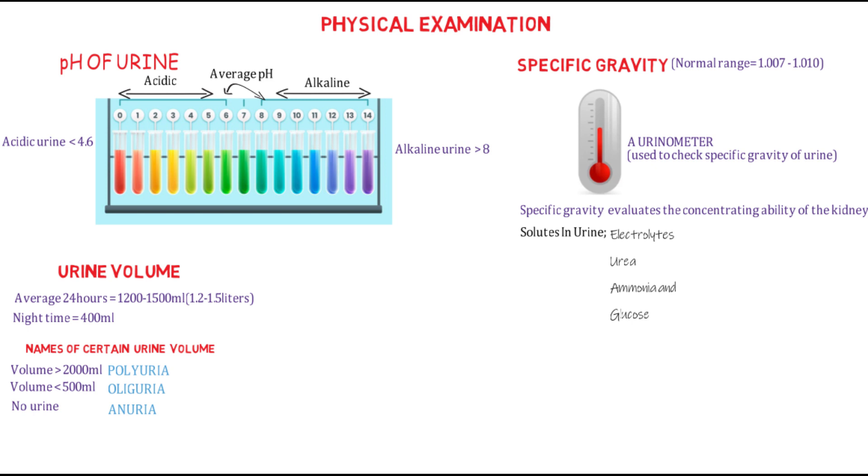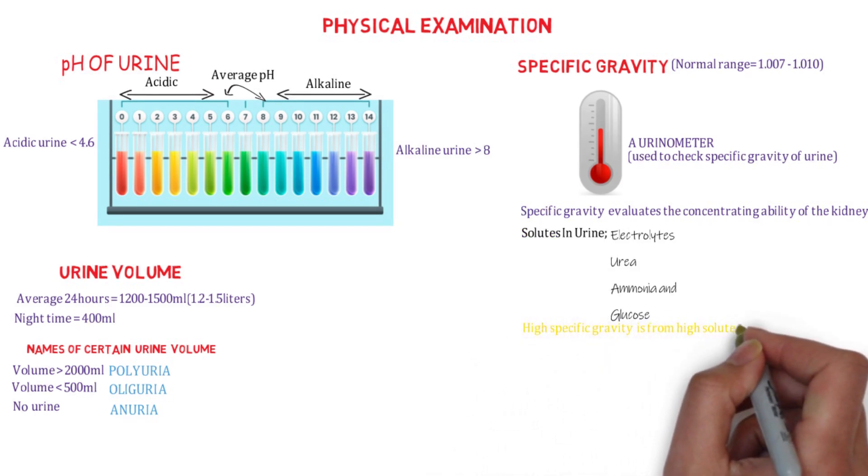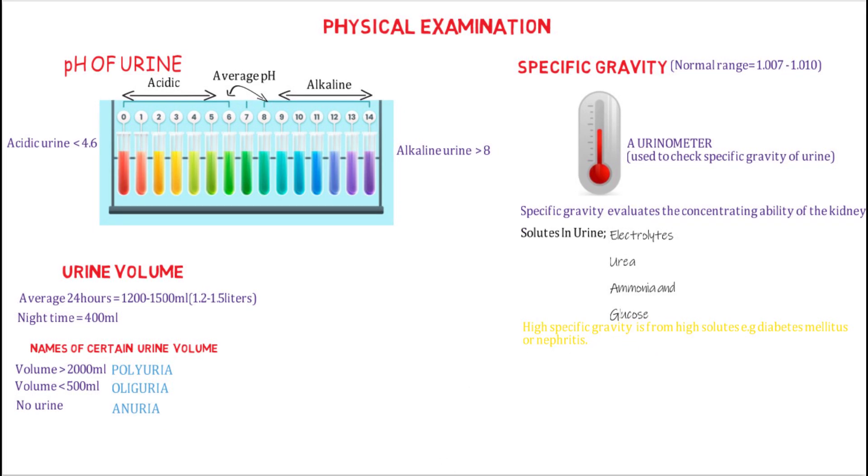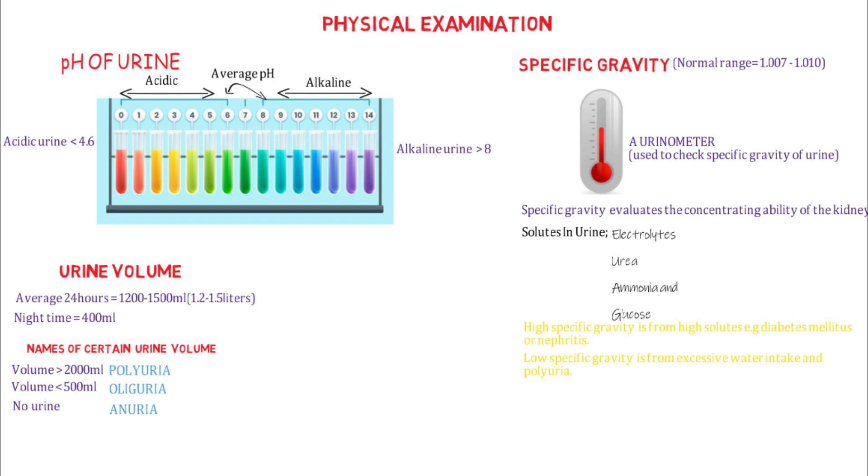High specific gravity could result from high solutes as in conditions like diabetes mellitus or nephritis, and low specific gravity could be due to excessive water intake and cases of polyuria. Remember, we said polyuria is when the urine formation is greater than 2000 ml.